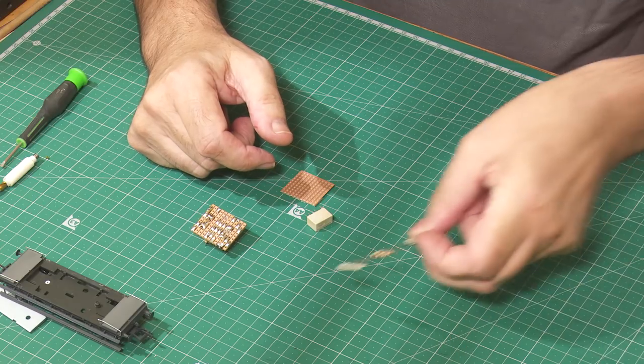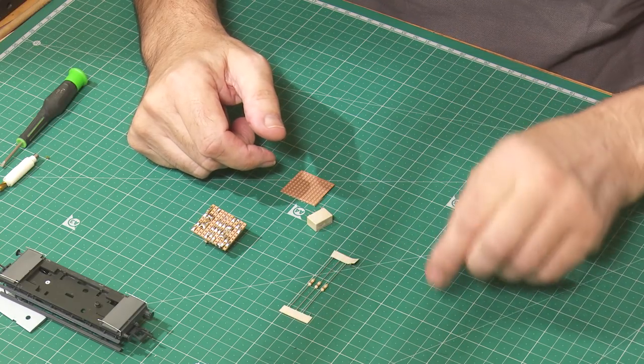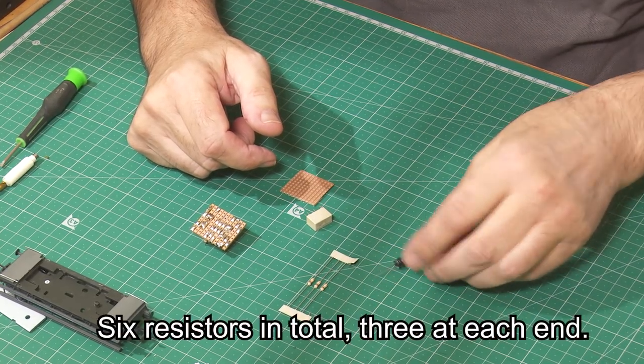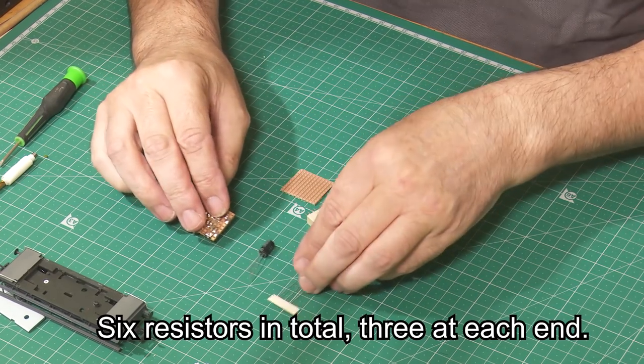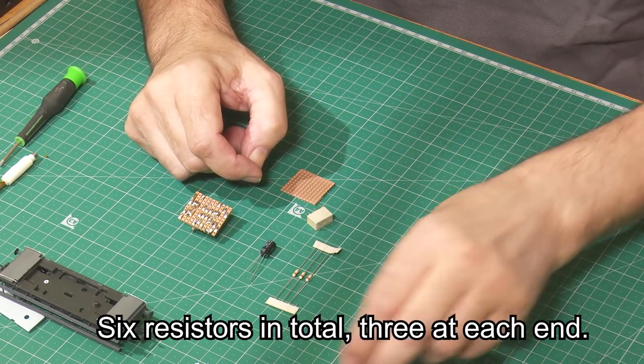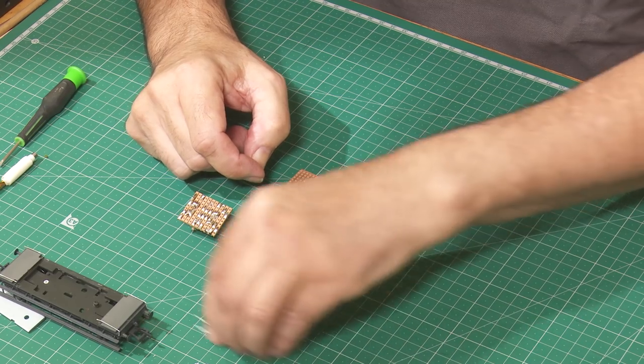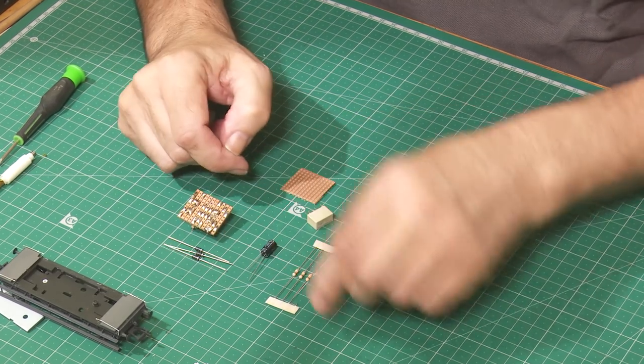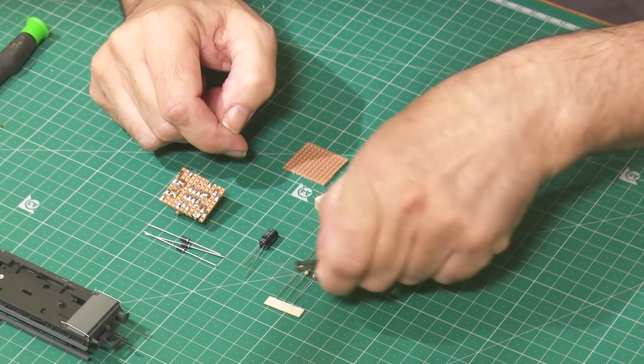We now need to assemble our components. So we have the circuit board that's been cut to size, the relay, three resistors, a capacitor, three diodes and two reed switches.